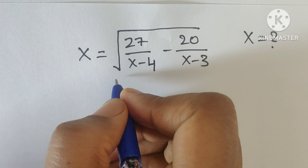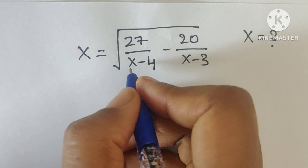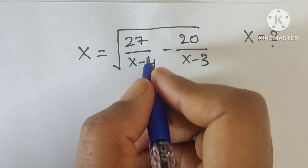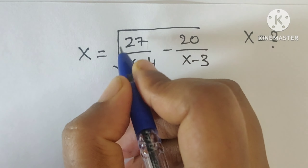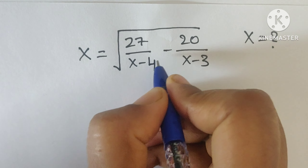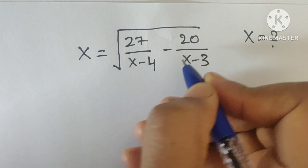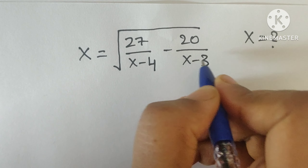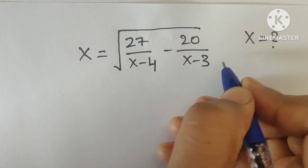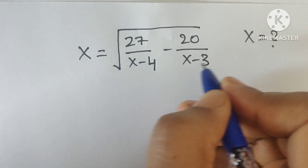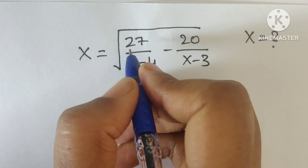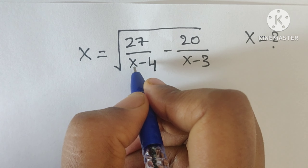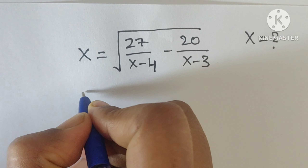Hello everyone, welcome back to our channel. Here we have one problem: x equals the square root of 27 divided by (x minus 4), minus 20 divided by (x minus 3). In this problem we have to find the value of x. Let's see how we solve this.